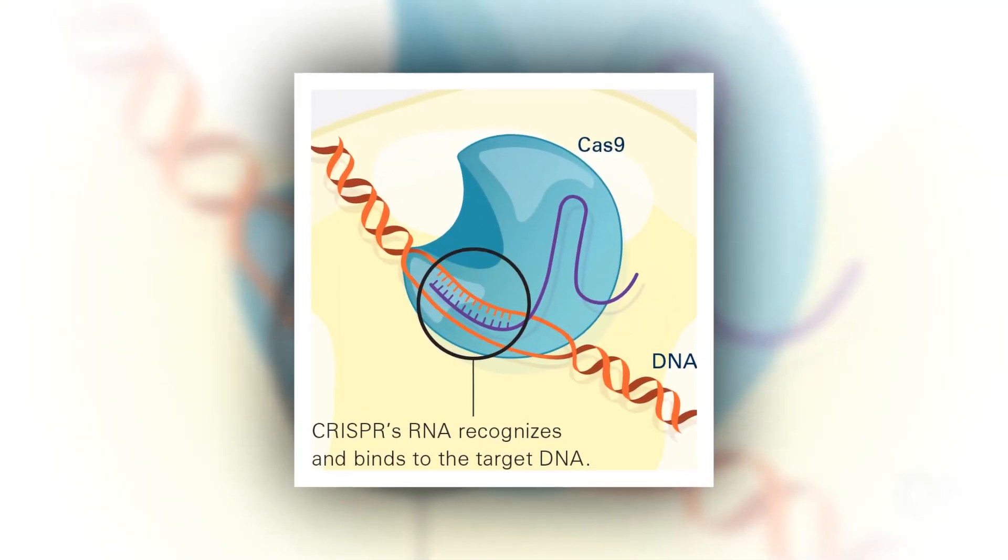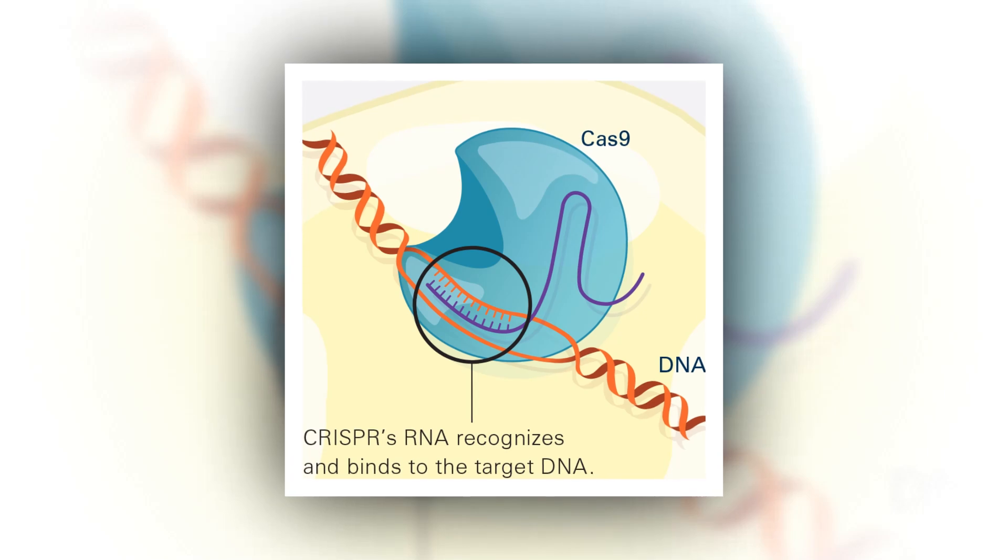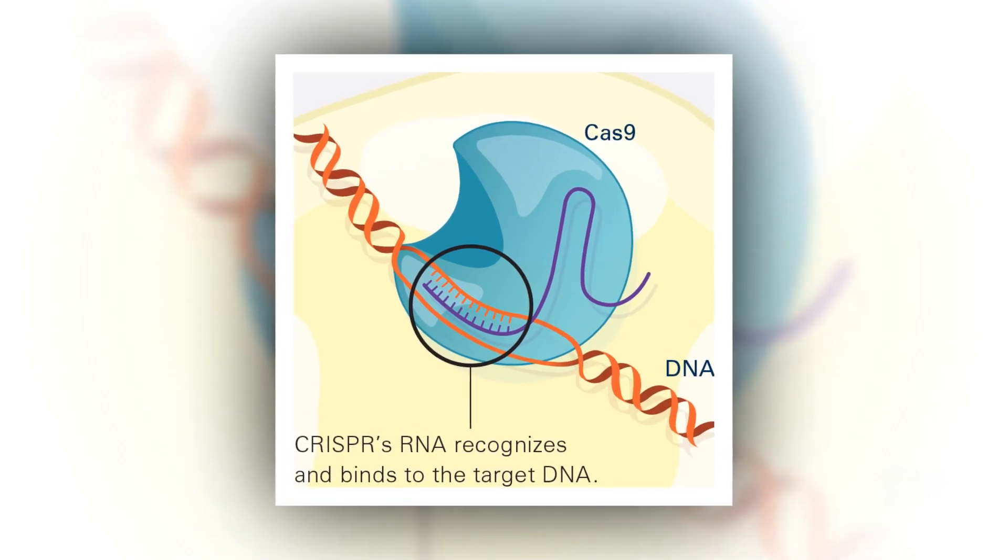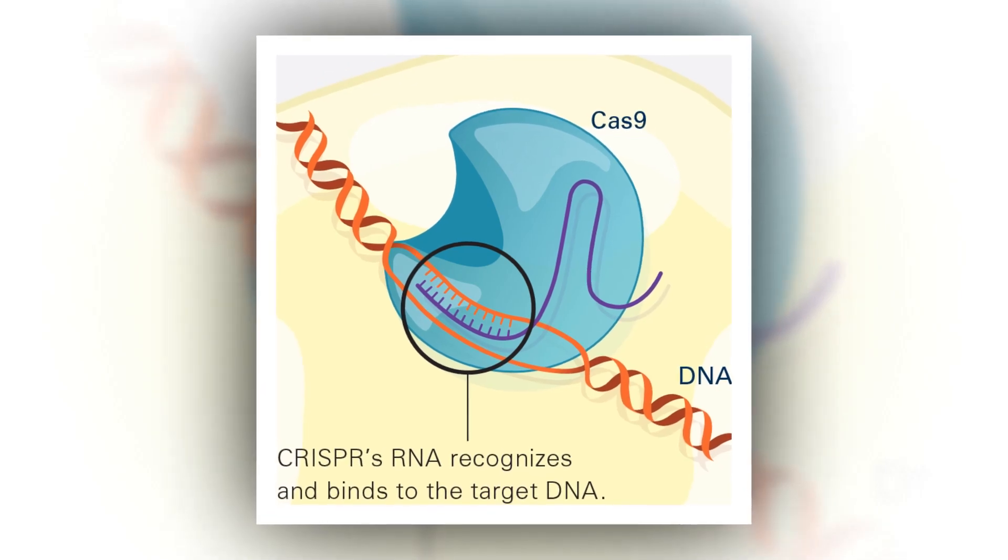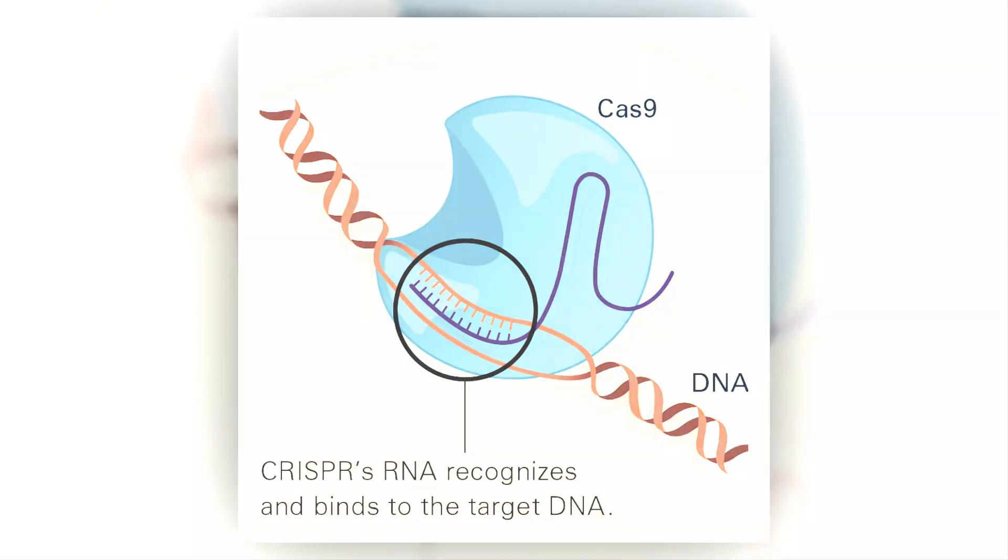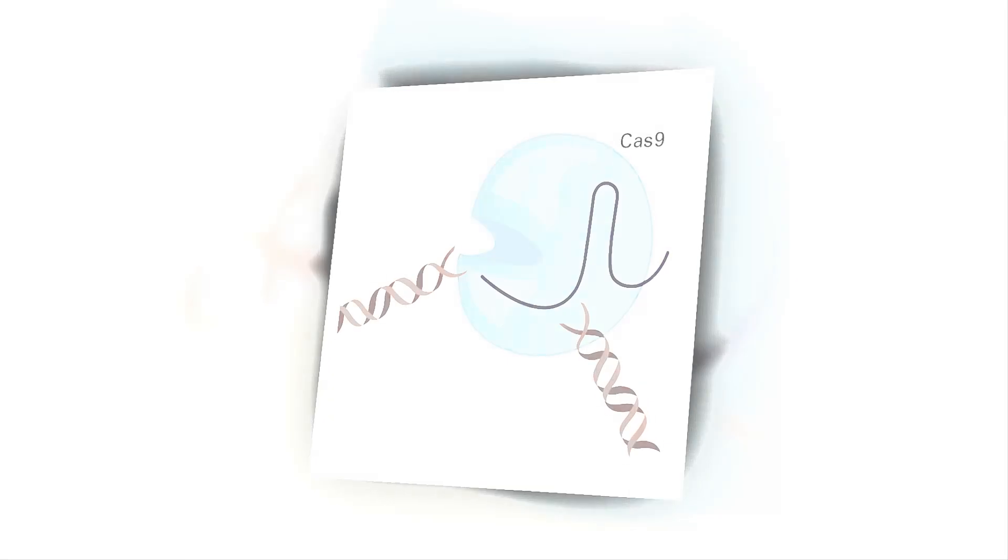They found that the editing machinery was precise in finding the target, the provirus sequences. But the cutting part led to the random removal or addition of DNA sequences in the neighboring non-viral regions surrounding the proviral sequence.